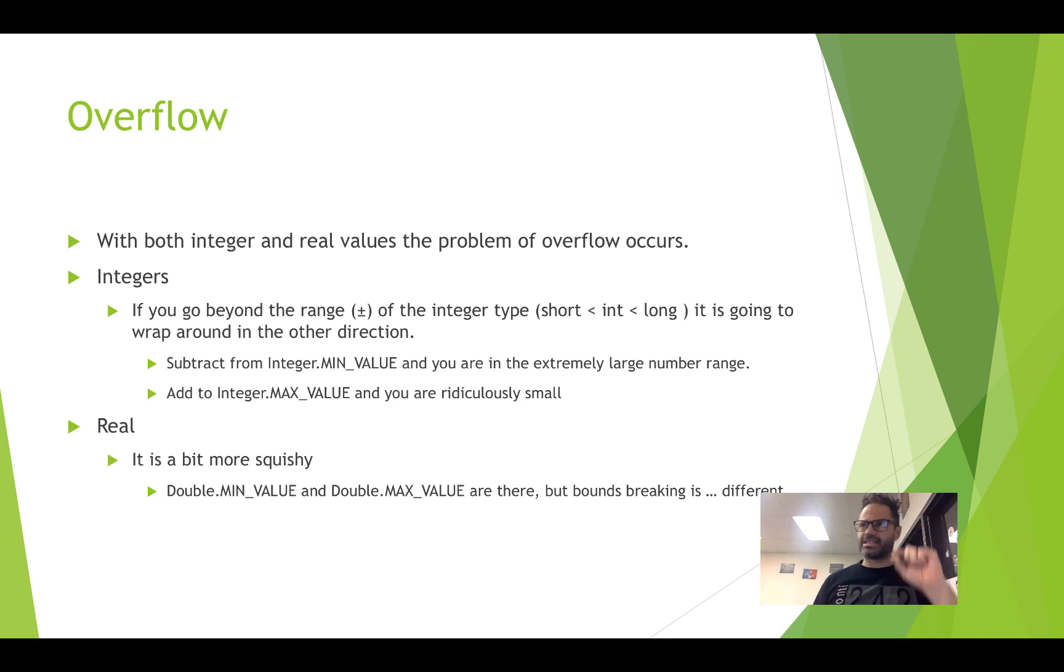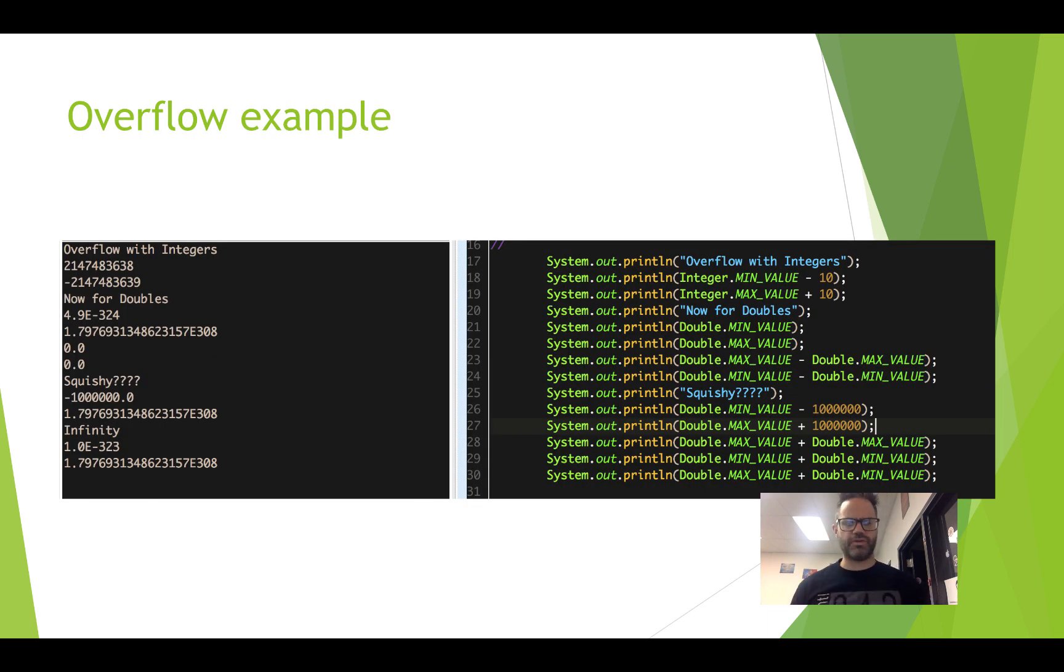However, with real numbers in double, it gets a little bit more squishy. Double min value, max value, right there. But when you break the bounds, it's a little different. Let's go take a look. So as you can see right here with the example of overflow, we have overflow integer at min value minus 10. So the smallest possible integer value minus 10 gives me 2,147,483,638. That's a positive number. But integer dot max value plus 10, so the biggest possible value is negative 2,147,483,639. Yeah, overflow. We've poured so much in the bucket that it flips the bucket over and goes in the other direction. Yeah, kind of weird. But that's okay.